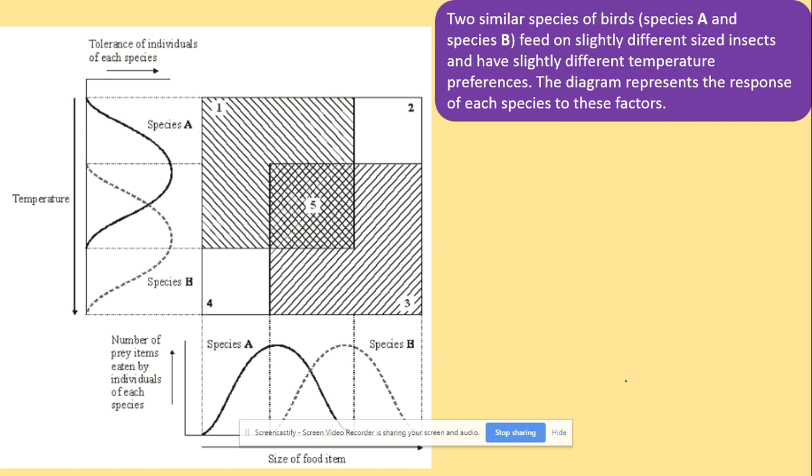Here we've got the last question. You've got two similar species of birds, A and B, fed on slightly different insects and have slightly different temperature. We've got this diagram here. Firstly, we need to understand the diagram. This is how the temperature increases. The species A are better adapted and tolerate lower temperature while the species B do that for the higher temperature. Then we've got the size of food. The food, we're talking here about the insects. That increases this way. Species A are going to eat small food, so small insects. That's increasing, so bigger insects.